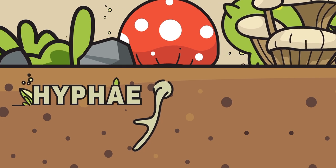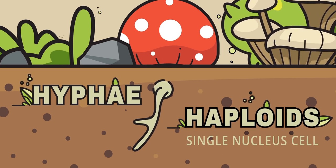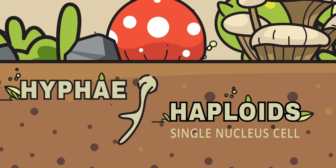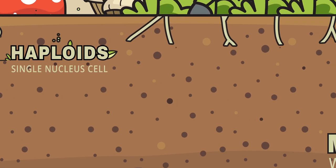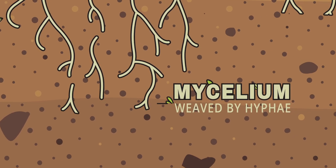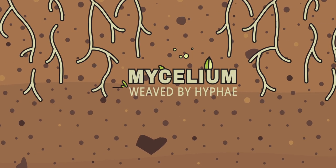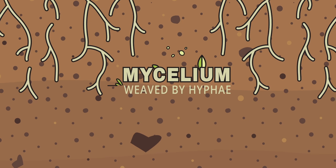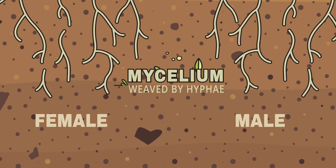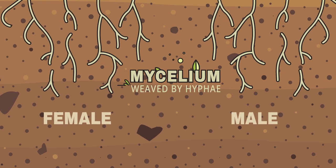Hyphae at this stage are haploid — they have only one nucleus in their cell. Hyphae love working together and form mycelium. Mycelium is often formed by hyphae weaving together without fusing. Now, not all hyphae are born the same. Just like us humans have female and male specimens of our species, mushroom hyphae have sexes.